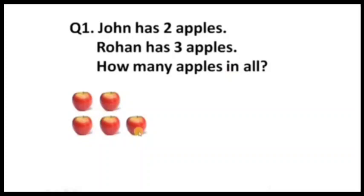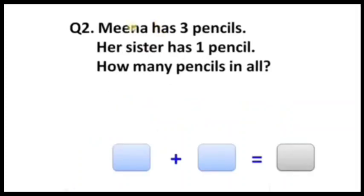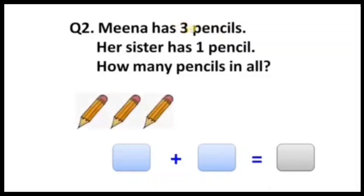Count: one, two, three, four, five. Total: two plus three. The addition sentence is two plus three equals five — that is the addition sentence. Now, Meena has three pencils. How many pencils does Meena have? Three. Three pencils are here. Her sister has one pencil — you have to add one pencil.